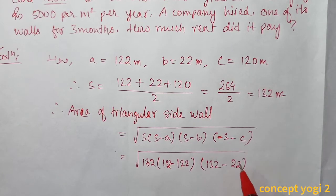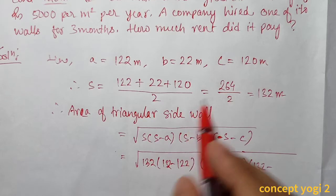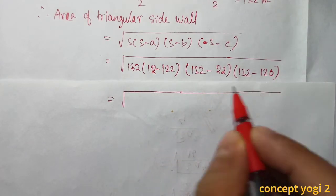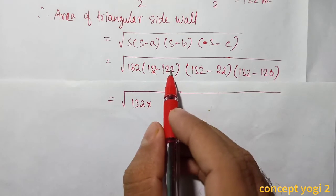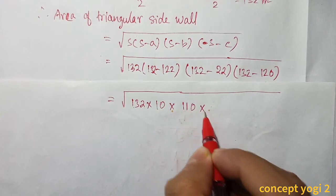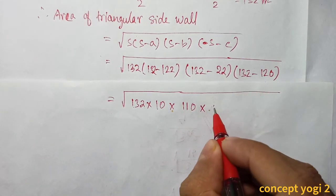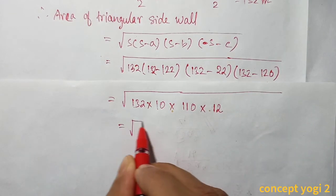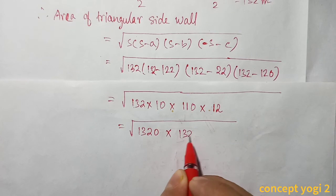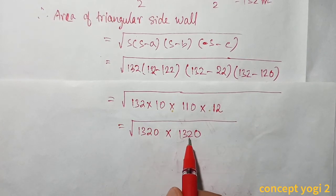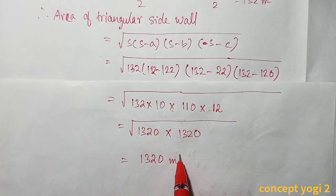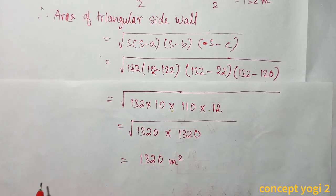Calculating: 132 − 122 = 10, 132 − 22 = 110, 132 − 120 = 12. So Area = √(132 × 10 × 110 × 12). Simplifying: 132 × 10 = 1320 and 110 × 12 = 1320, so we get √(1320 × 1320) = 1320 m². This is the area of the triangular wall.